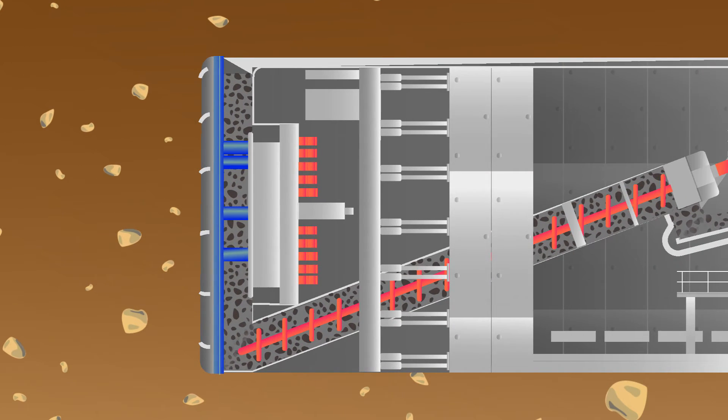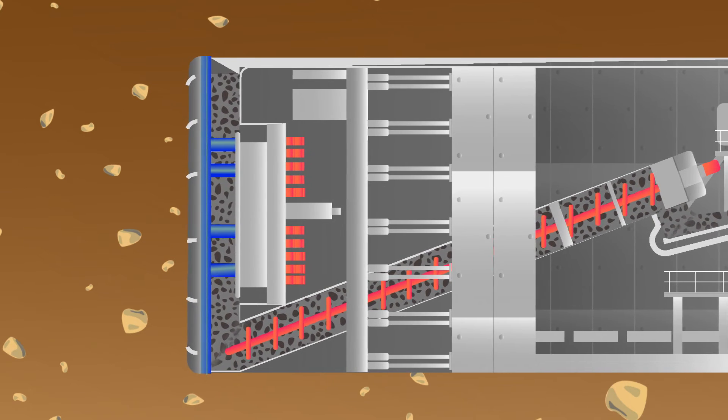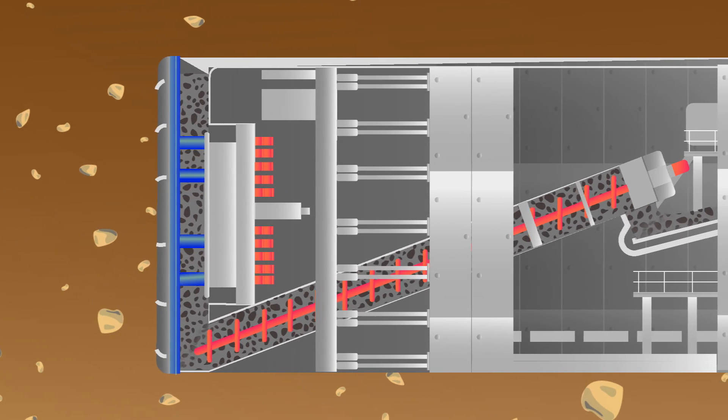Excavated materials are moved away from the cutter head via a screw conveyor, while the hydraulic cylinders keep pressing the machine forward.